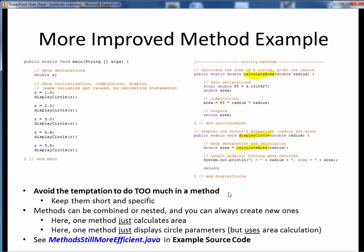First, we should avoid the temptation to do too much in any one method. In other words, no kitchen sink methods. Keep them short and specific. As we've just seen here, we can always combine or nest our methods or create new ones if needed. Here, we've got one method calculating the area and another method displaying the area and radius, yet using the other one internally. Please take a moment now to pause this video and view the short code walkthrough for methodsstillmoreefficient.java. Open up this file in JGRASP so you can follow along. You'll find this example in the example source code module on Canvas. This ends this introductory material on methods.